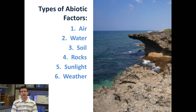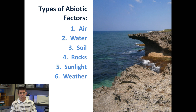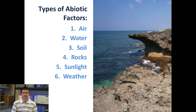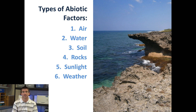The abiotic factors in an ecosystem can include things like air, water, soil, rocks, sunlight, and weather. These abiotic factors have a significant impact on the organisms that live in the ecosystem, as well as the characteristics of the ecosystem.